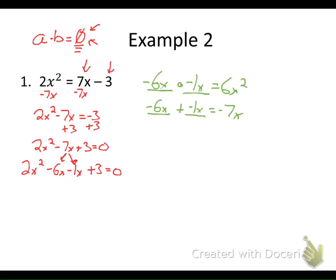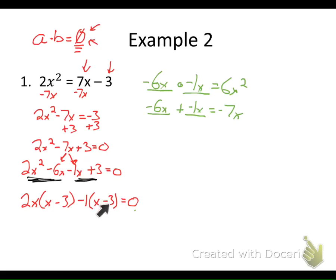Now I'm ready to group. I look at my first two terms as one group and my next two terms as another group. The GCF of the first two terms has a 2 and an x in common, so I factor out 2x, leaving me with x minus 3. For the second two terms there's nothing in common so the GCF is 1, but since the first number on the left is negative I'll factor out a negative 1. When grouping, both parentheses should end up the same. I factor out the common factor x minus 3, leaving me with 2x minus 1 in the other parentheses.